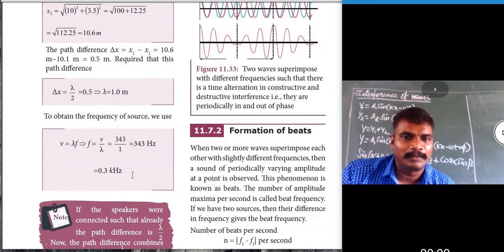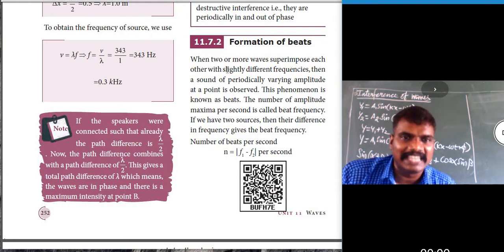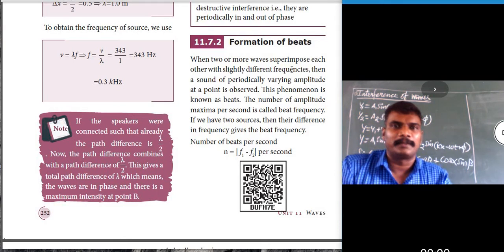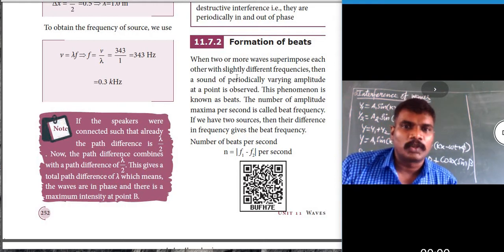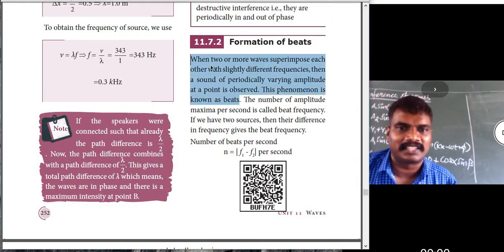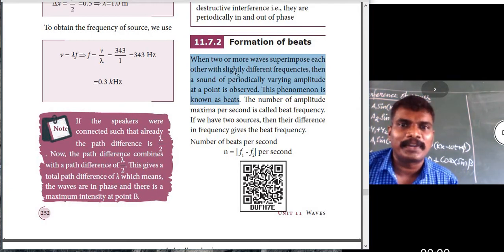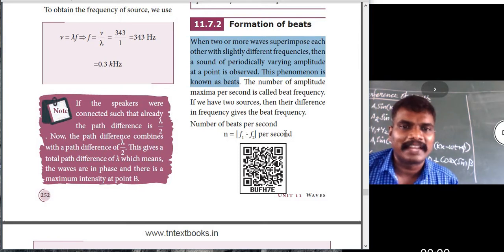The next very important topic is the formation of beats. When two or more waves superimpose with slightly different frequencies, a sound of periodically varying amplitude is observed at a point. This phenomenon is known as beats. The number of amplitude maxima per second is called the beat frequency.